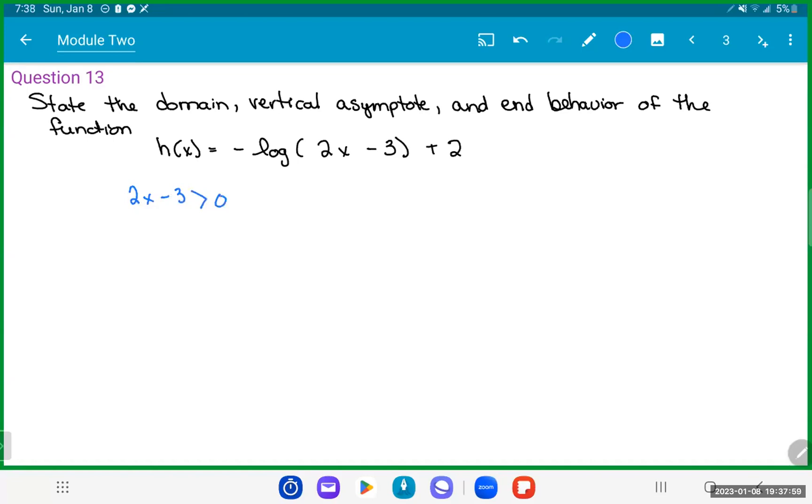So the first thing we want to do is solve for that portion. We can add 3 to both sides to get us 2x is greater than 3. Then we'll want to divide both sides by 2 to give us that x must be greater than 3 halves.